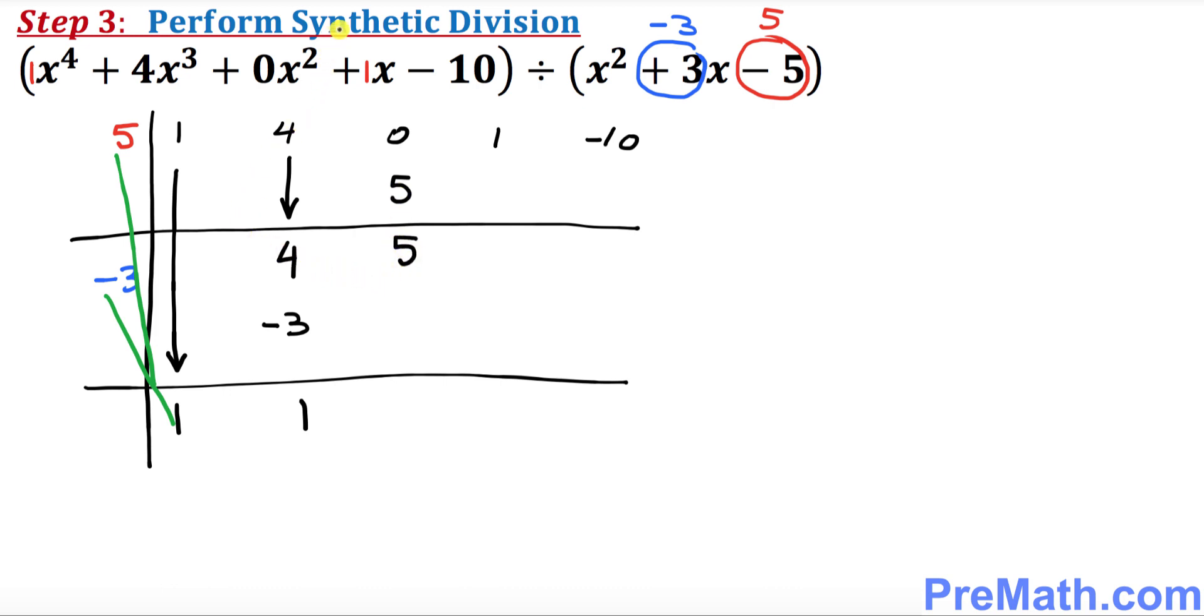So the next thing we're going to perform exactly the same thing. Once again, negative 3 times 1 is negative 3 right here. And likewise, 5 is going to multiply with this 1, so 5 times 1 is 5 right here. 5 and negative 3 is going to give you 2, and 1 plus 5 is going to give you 6.